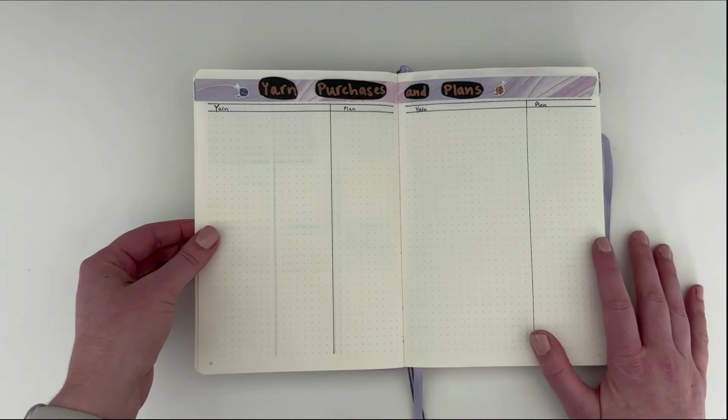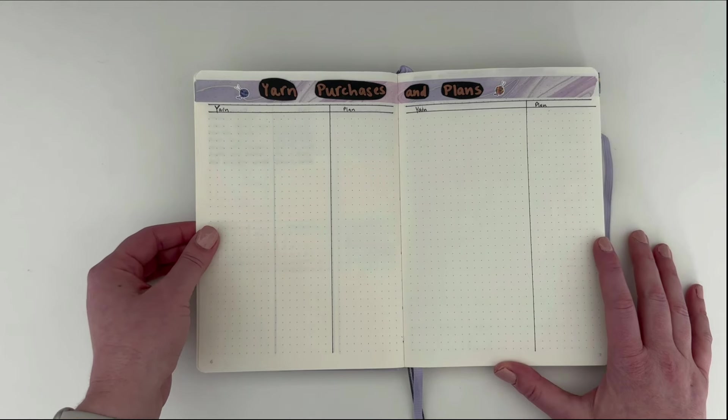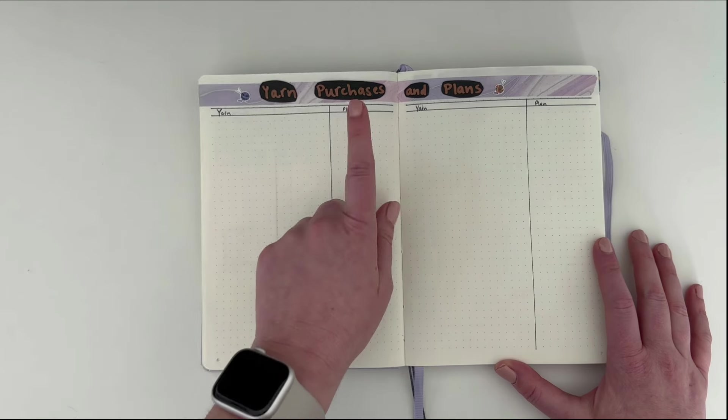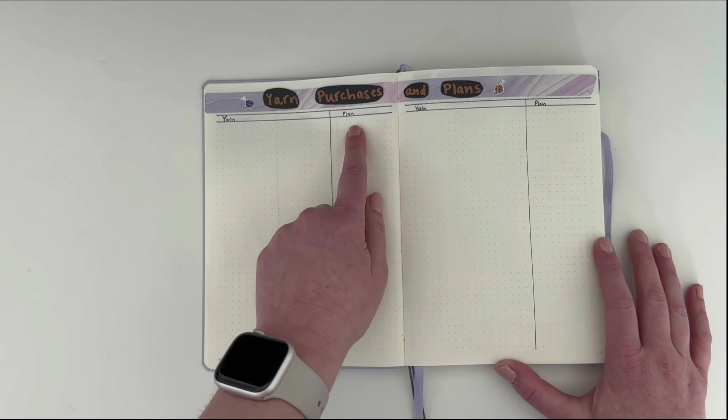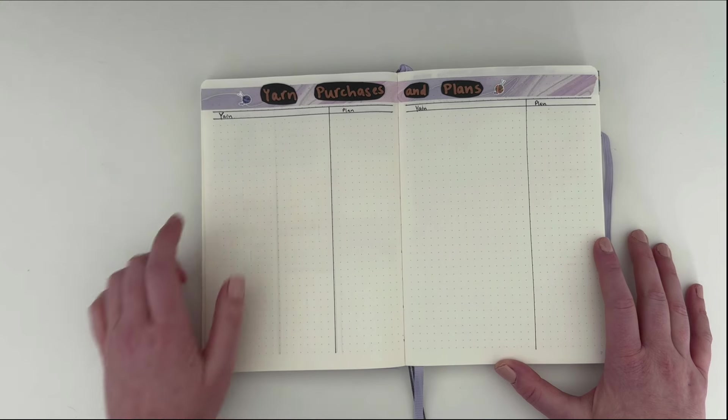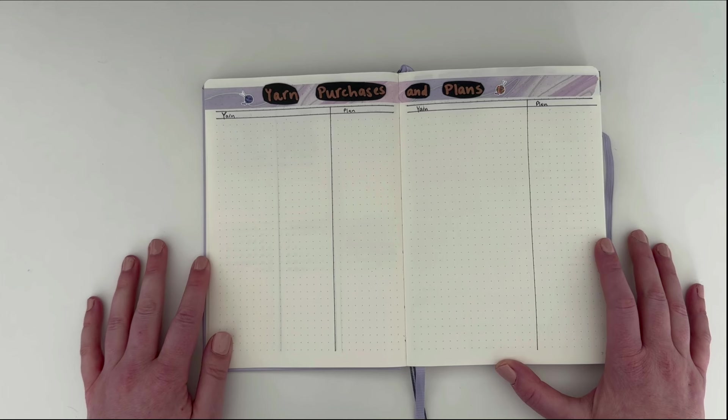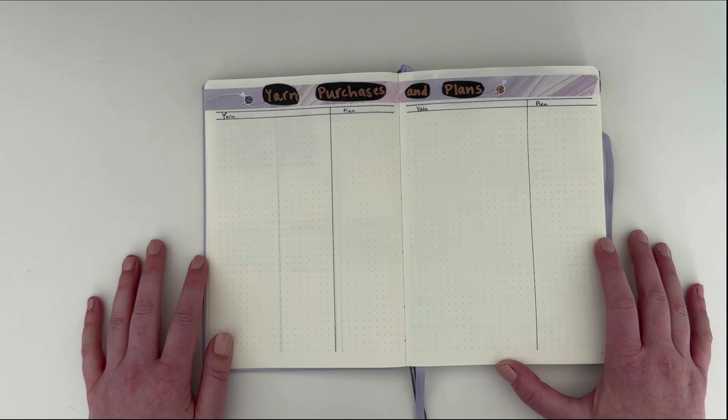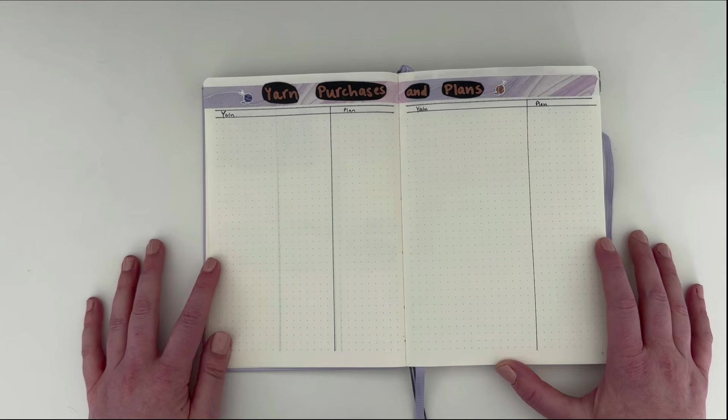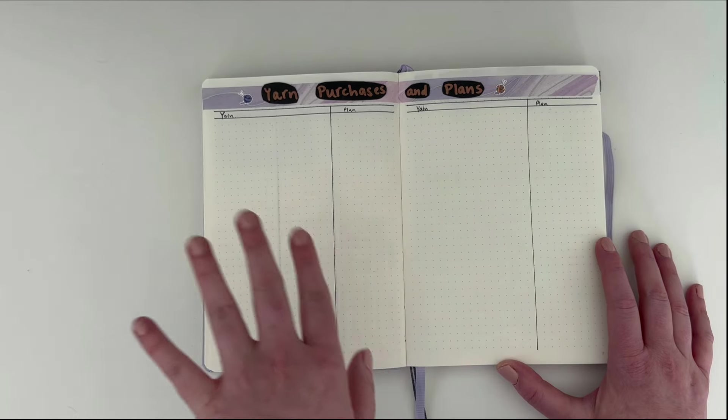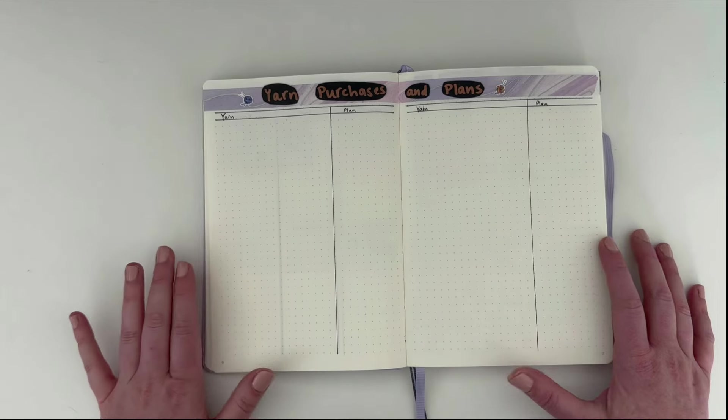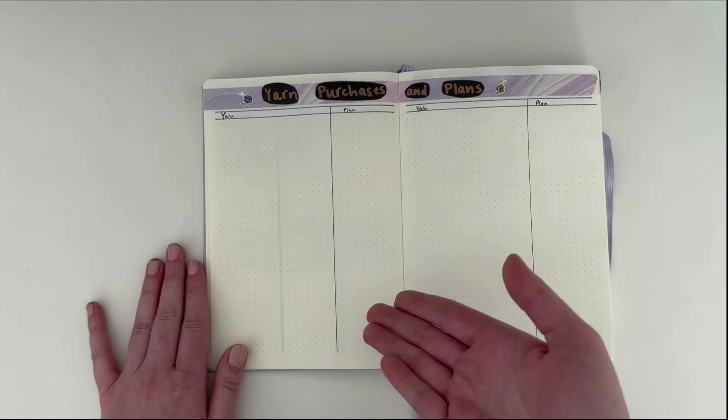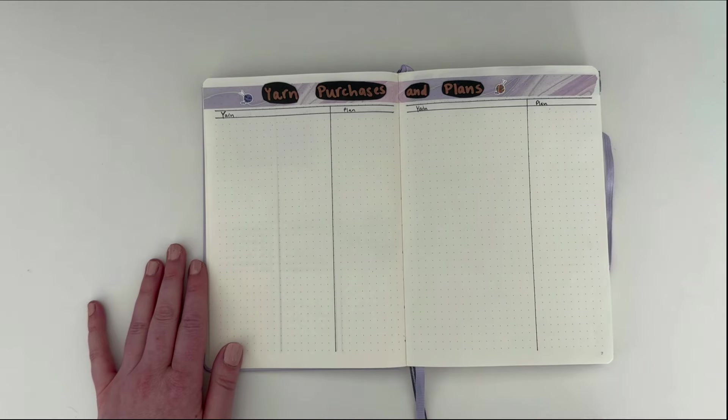The next page is my yarn purchases and plans. So anytime I purchase yarn, I'm gonna write it down here and then what the plan is, what sweater or whatever project I have planned for it. I found that with a lot of pre-orders that I was ordering from, by the time I would get the yarn after 10 to 12 to 15 weeks of waiting, I would forget sometimes what my original thought was. So I added this into my 2023 journal towards the back half of the year and I found it super helpful. Also, I'm really proud of myself. We're on January 6th. I haven't bought any yarn yet this year.